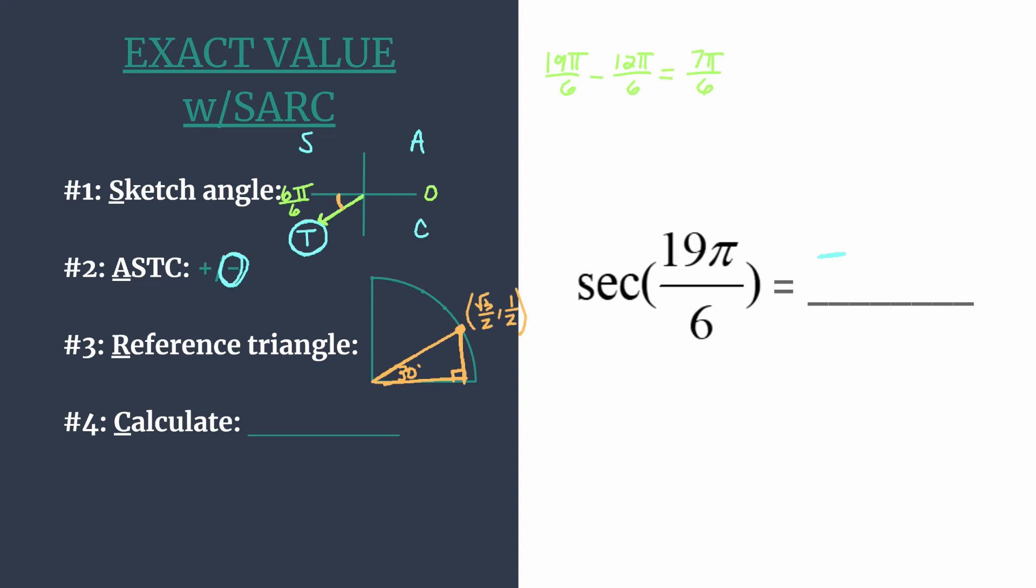Now we're ready to calculate our trig ratio using those coordinates from the previous step. The secant of an angle on the unit circle is 1 over x because it's the reciprocal of cosine, and cosine is just the x. Here's our x coordinate: 1 divided by √3 over 2, which flips that fraction in the denominator, so we have 2 over √3.